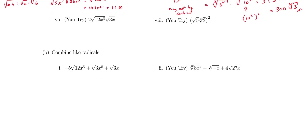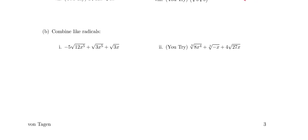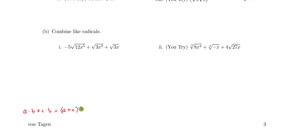I'd like to look at combining radical terms. Just like we've seen before with like terms, if we have a times b plus c times b, both terms have a common factor of b, so we can factor and combine them to get (a + c) times b. Usually we just add together the constants — that's how we combine like terms.